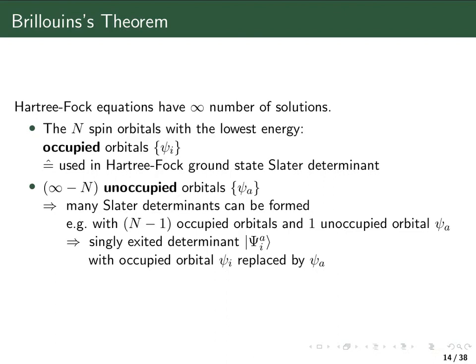For example, we can make Slater determinants where we have N-1 occupied orbitals, meaning N-1 of the spin orbitals in the Slater determinant are the same as we had in the Hartree-Fock ground state Slater determinant, and then we have one unoccupied orbital ψ_a. Those Slater determinants are typically called singly excited determinants, although we should not necessarily associate these determinants with excited states of a molecule.